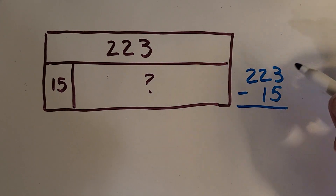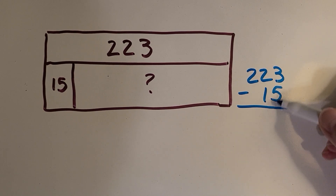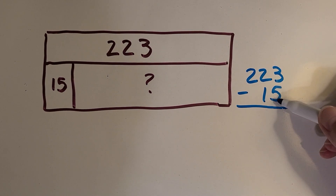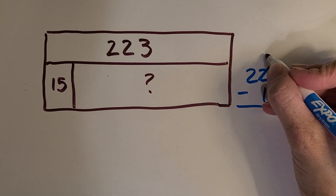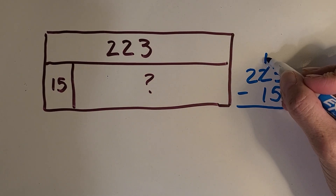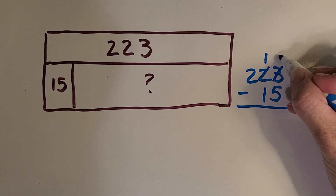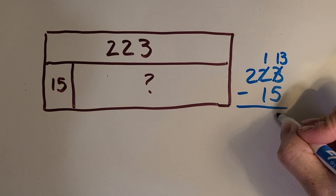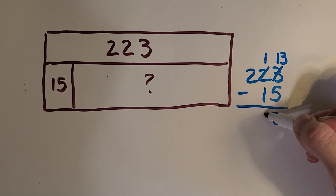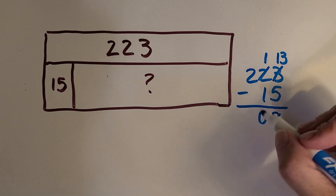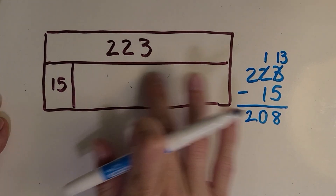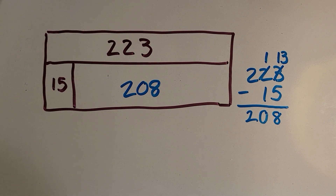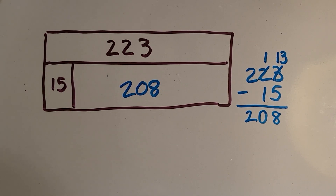Let's check your work. When I start subtracting, I'm gonna start with the ones place, and I already see a problem — we have 3, and we're trying to take away 5. We don't have enough, so I'm gonna regroup. We can take a ten and break it up into ten ones, so that's gonna be thirteen. What is 13 minus 5? Eight. 1 minus 1 is zero. 2 minus nothing is 2. So we have 208 turtles remaining, to split up into the 8 zones.